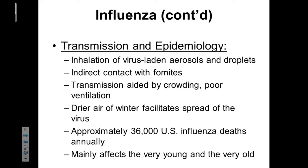Looking at the transmission and epidemiology of influenza: it's going to be inhaled when you breathe in virus-laden aerosols or droplets. If somebody has influenza and they cough in front of you and you breathe in, you've just inoculated yourself with that virus. We can also have direct contact with fomites, such as a doorknob or a straw. Transmission is also aided by putting many people into a small space, where the virus can quickly move from person to person. In the winter months, dry air allows the virus to spread much more quickly and efficiently.